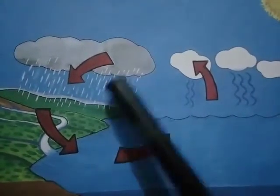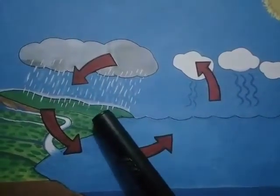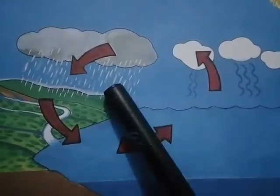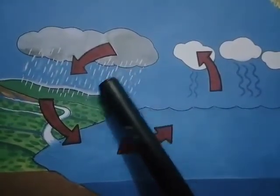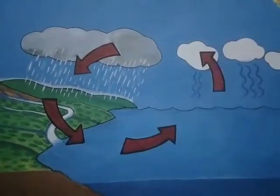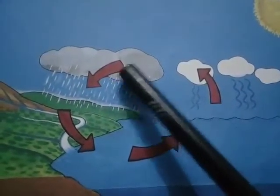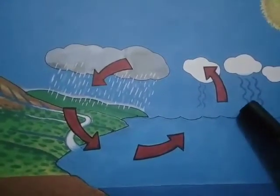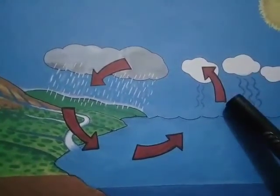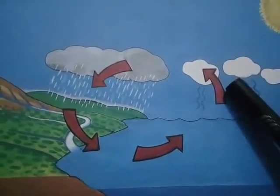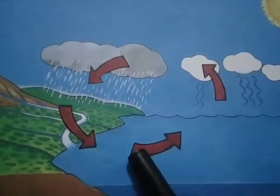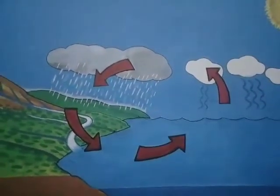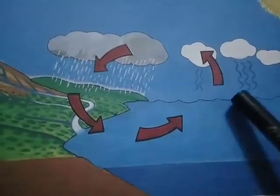Sometimes these tiny drops of water join to form large drops. When the drops get heavy enough, they may fall as rain. The rain water again goes into oceans, seas, rivers, lakes, ponds, and streams. It again evaporates, so this cycle goes on repeating. This is called the water cycle.